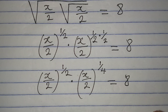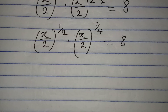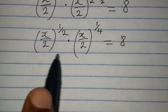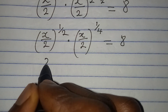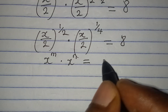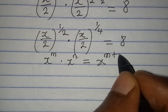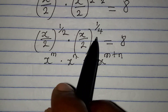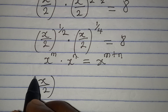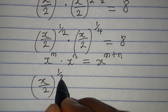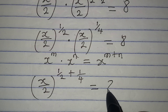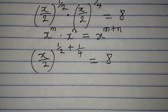This is equal to 8. Now I'm going to take another step. Remember, we're having the same base: x over 2 and x over 2. From the law of indices, x to the power of m times x to the power of n equals x to the power of m plus n. So I'm going to apply that principle here — I'll pick one base, x over 2, and raise it to the power of 1 over 2 plus 1 over 4.